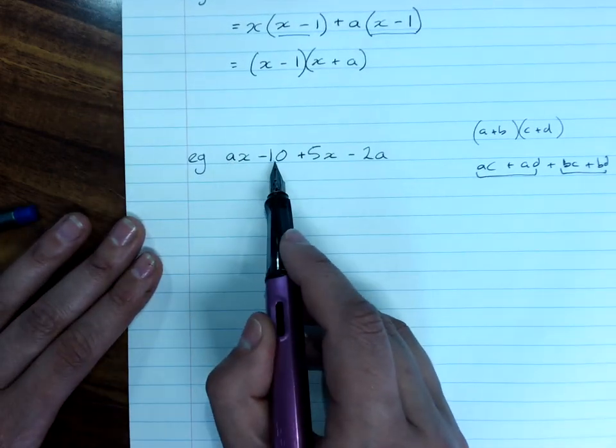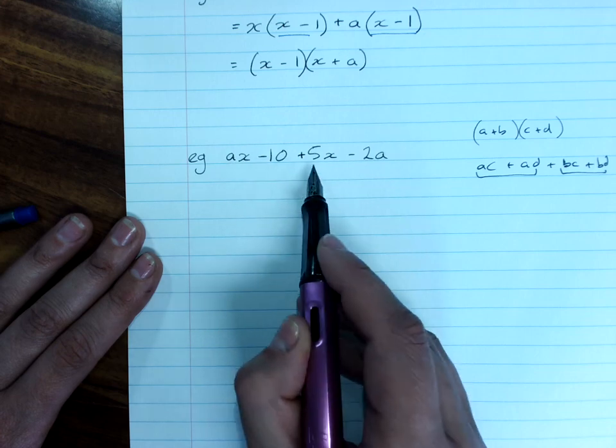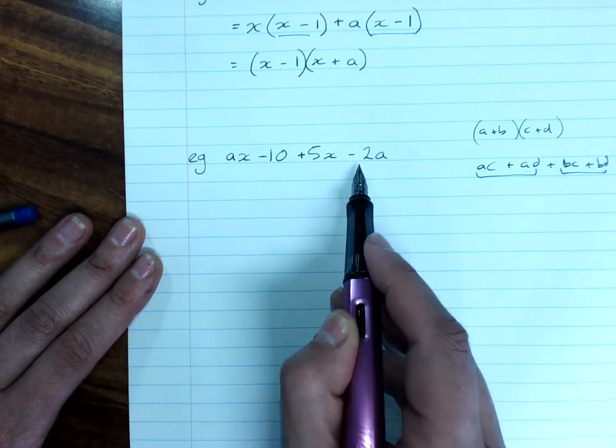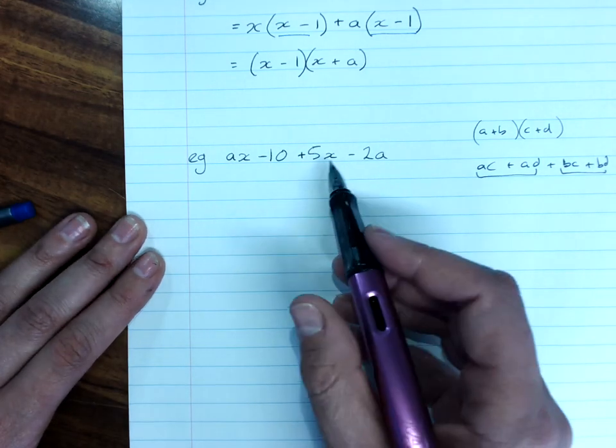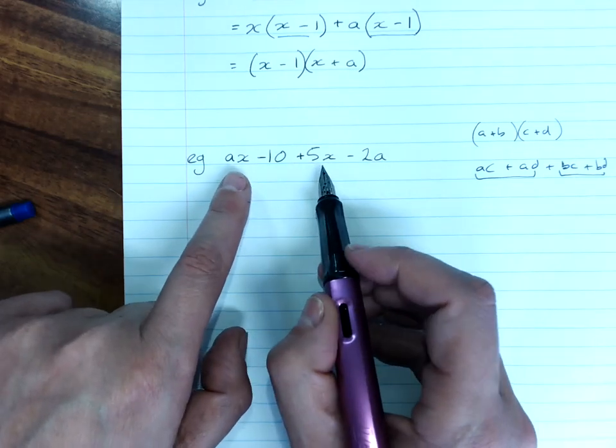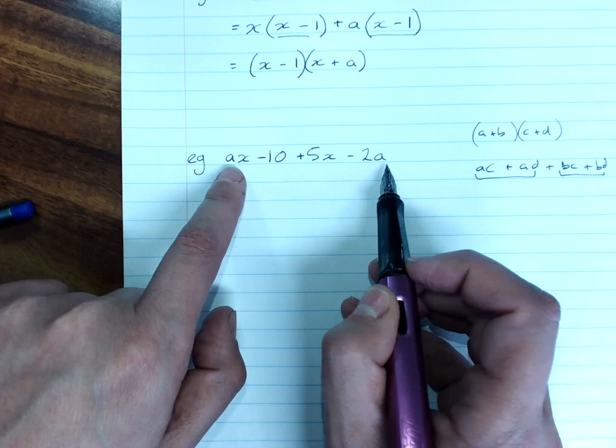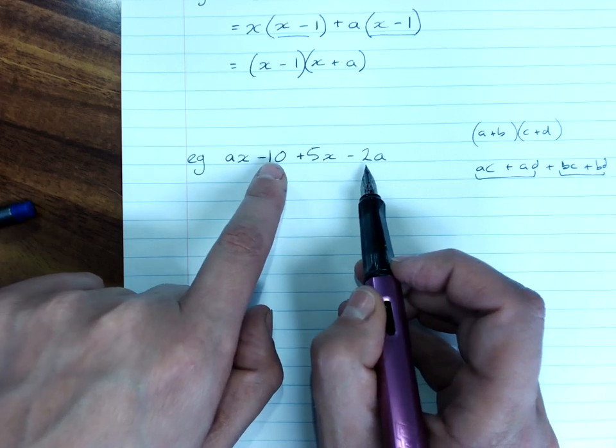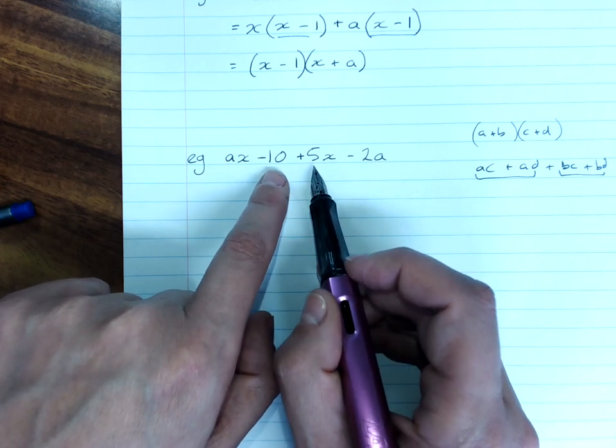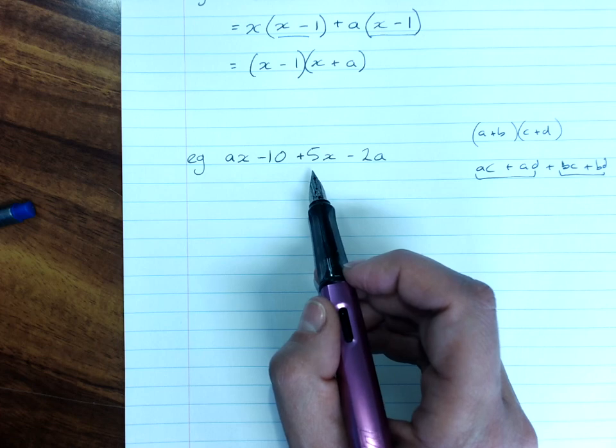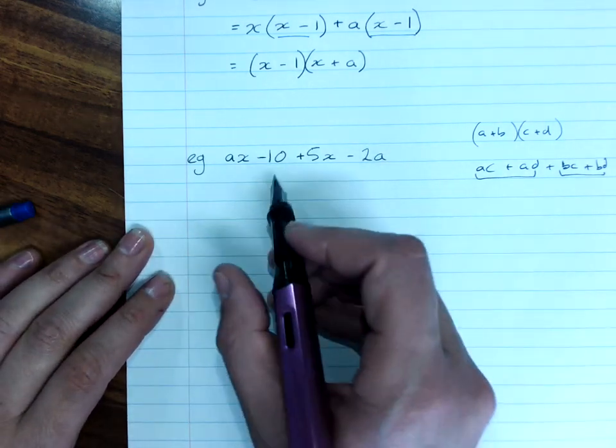So here there's no factor between ax and negative 10. There's no common factor between 5x and negative 2a. So you can rearrange. Now we can have the a's go together, or we can have the 2 and the 10 go together or the 5 and the 10 go together. Well there's all sorts of options as long as you get two pairs that have HCF's.